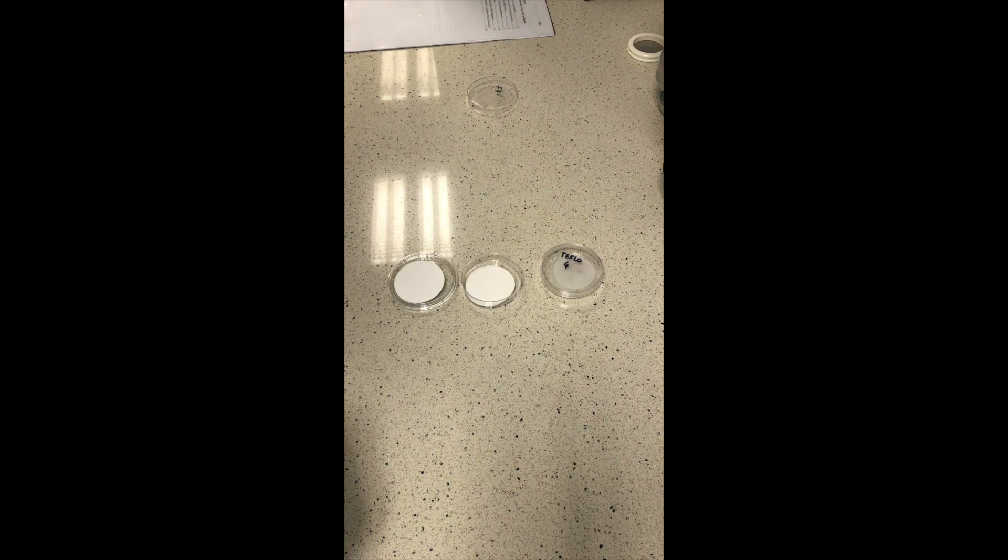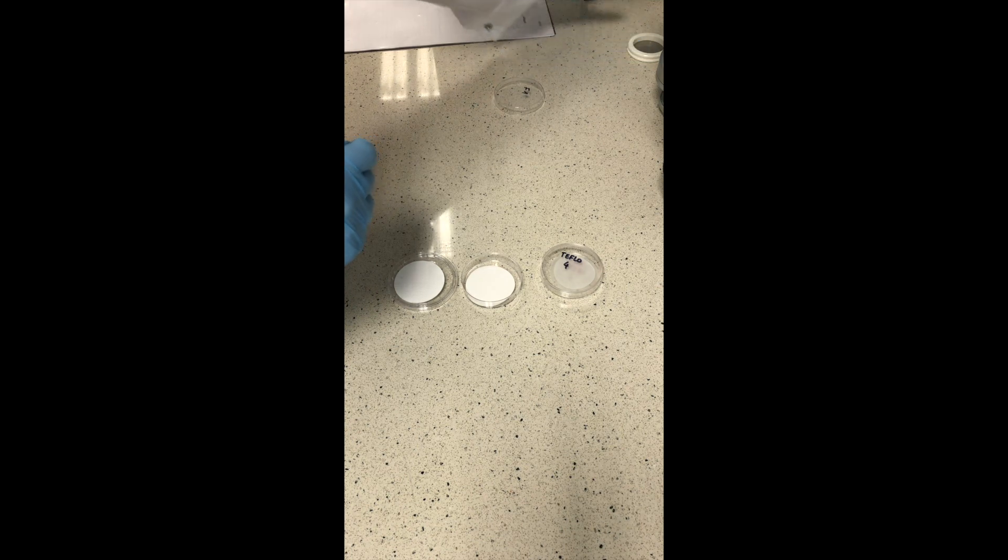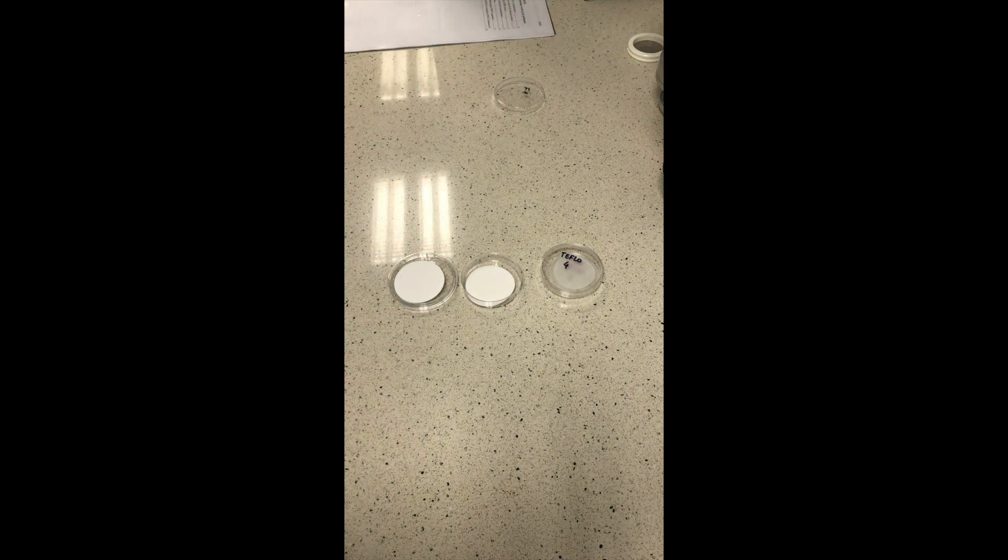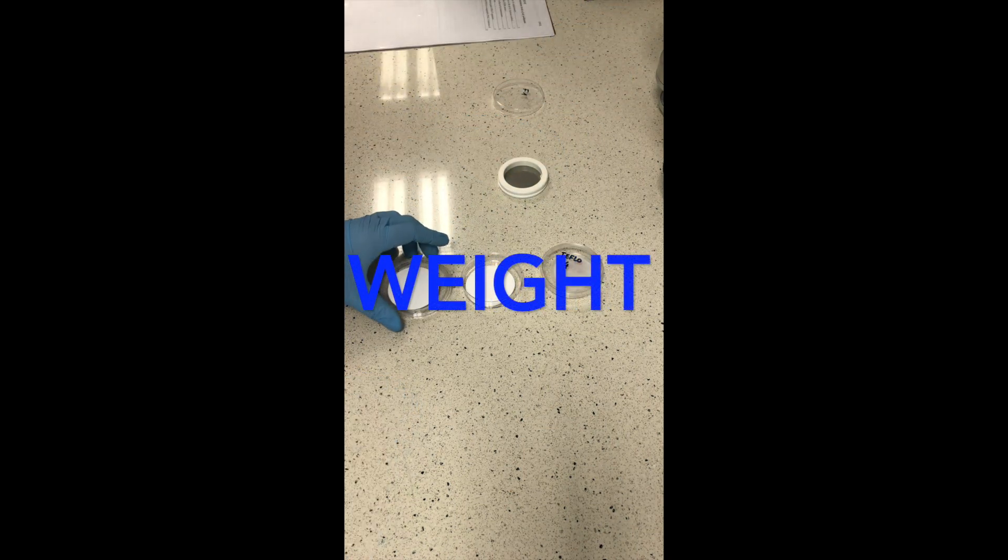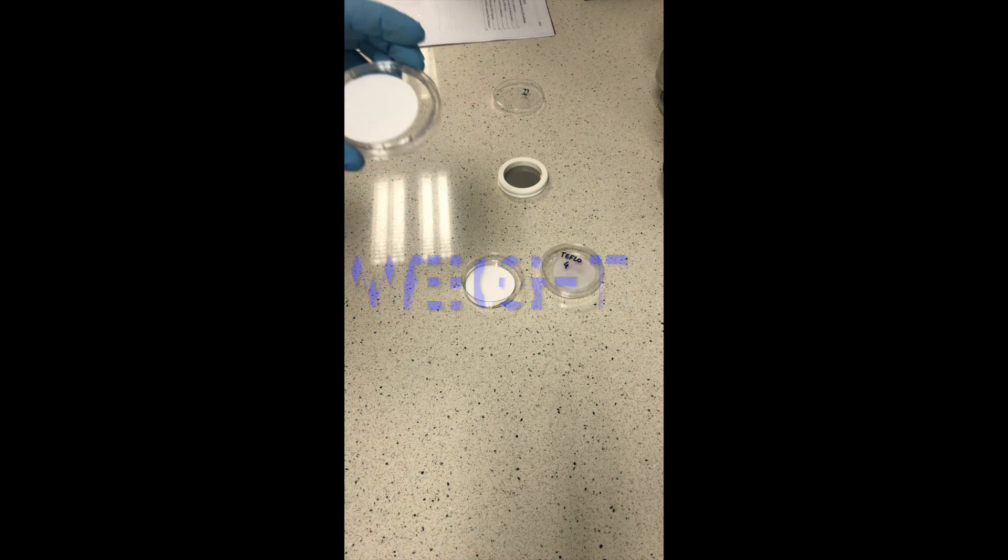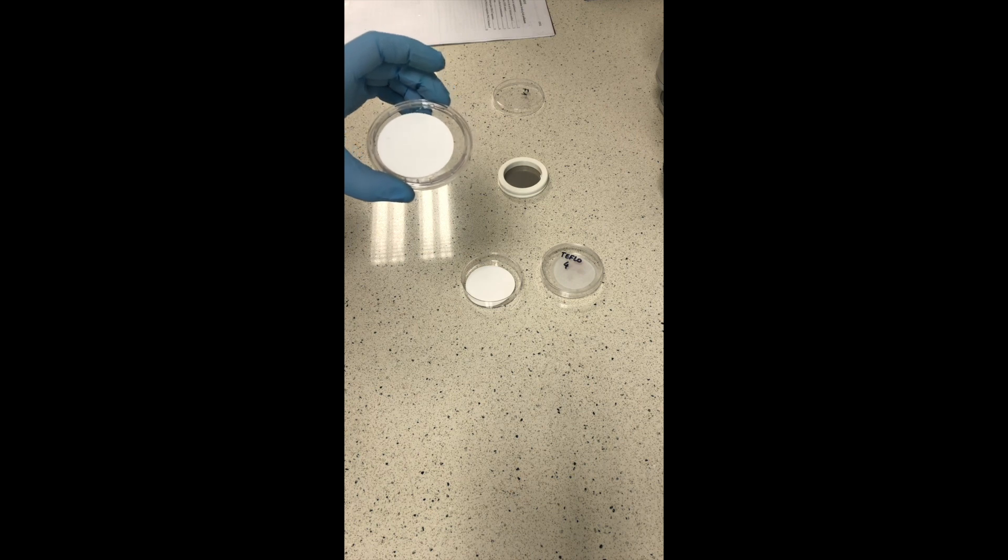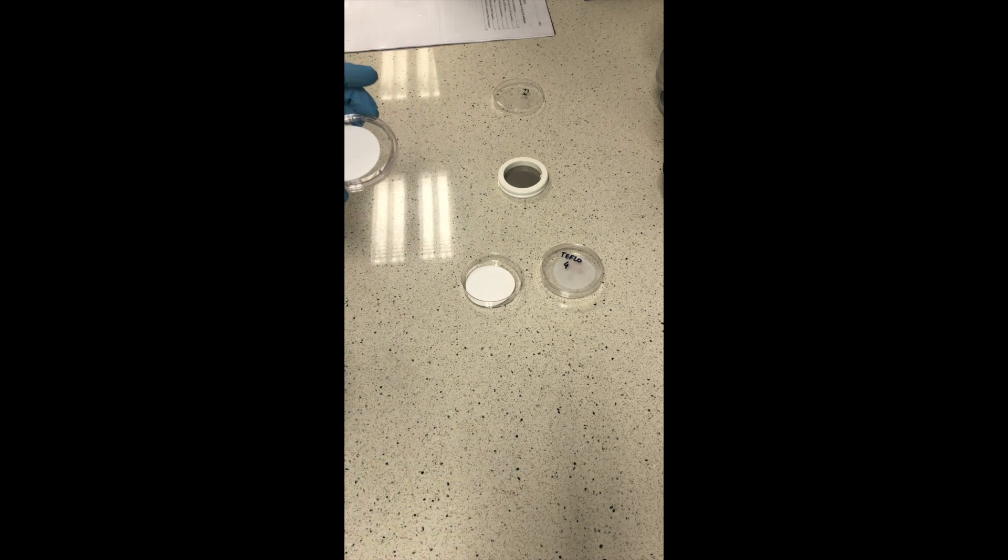So what do we do? We will use the sampler. I will show you in a moment the sampler, but first we have to weigh the filter. We use the balance to weigh the filter first before exposition and next after exposition.